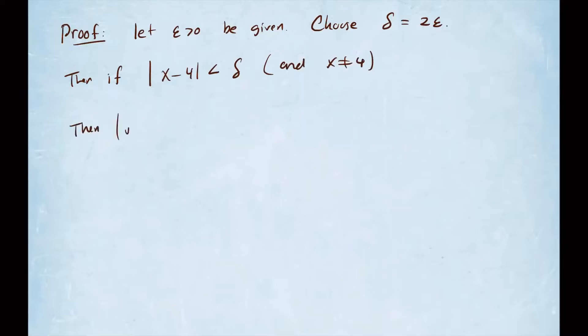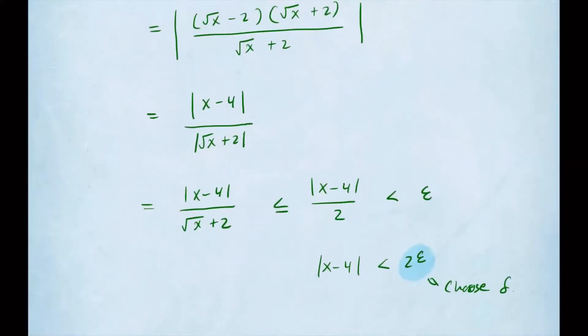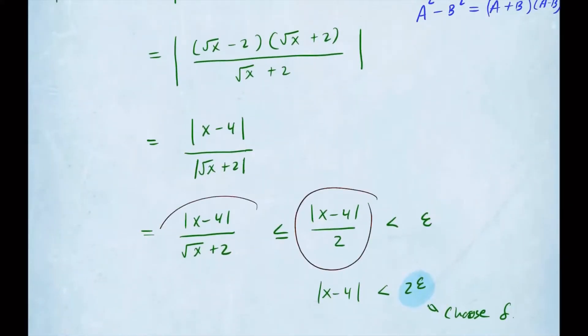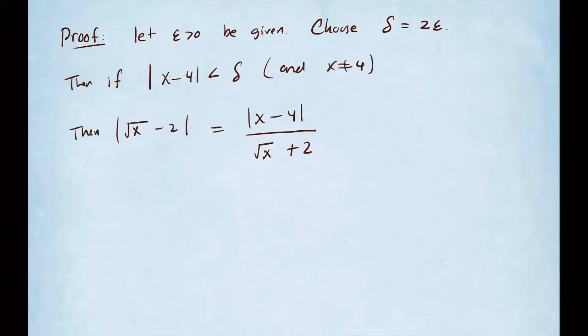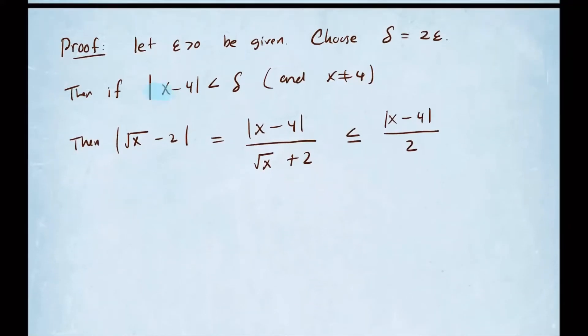Then we have the following. The absolute value of square root of x minus 2, we know that this is equal to x minus 4 in absolute value over square root of x plus 2. That's the statement right here after multiplying by the conjugate. So I know that this statement is going to be less than or equal to absolute value of x minus 4 over 2. And we know this is going to be less than delta.